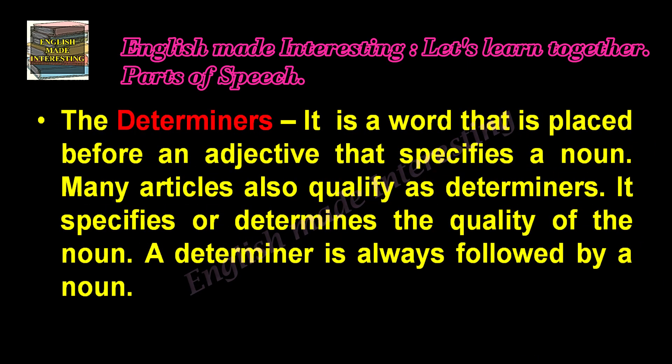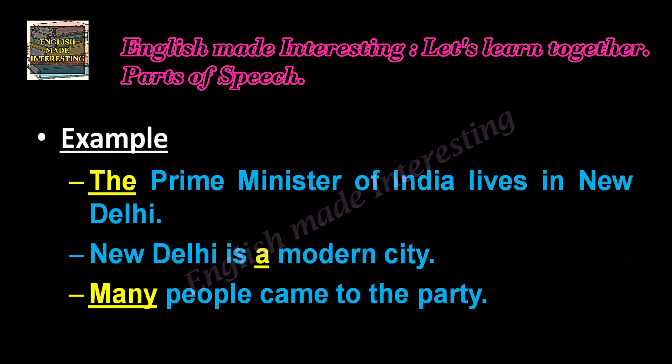Now let us see what determiners are. A determiner is a word placed before an adjective that specifies a noun. Many articles also qualify as determiners. It specifies or determines the quality of the noun, and a determiner is always followed by a noun. Examples: 'The Prime Minister of India lives in New Delhi.' 'New Delhi is a modern city.' 'Many people came to the party.' So here, the, a, and many are the determiners used.